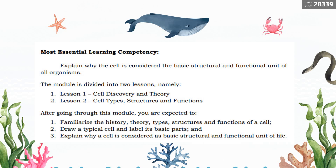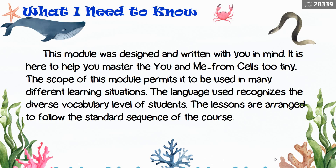After going through this module, you are expected to: number one, familiarize the history, theory, types, structures, and functions of a cell; draw a typical cell and label its basic parts; and explain why a cell is considered the basic structural and functional unit of life. The language used recognizes the diverse vocabulary level of students, and the lessons are arranged to follow the standard sequence of the course.